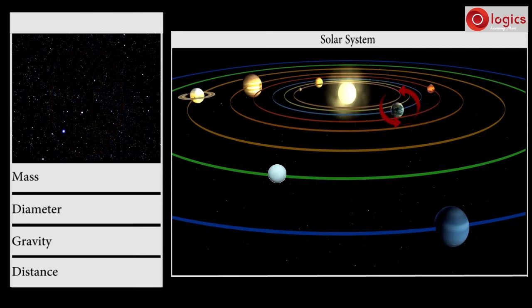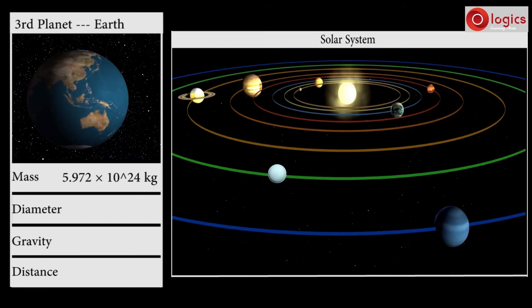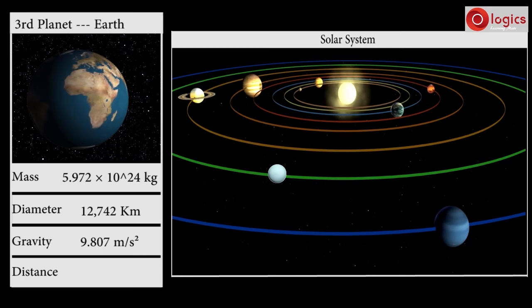The third planet in our solar system is our own planet Earth. Its mass is 5.972 × 10^24 kilograms. Earth's diameter is 12,742 kilometers. Gravity on Earth is 9.807 meters per second squared, and Earth is 149.6 million kilometers away from the Sun.